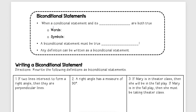Then we have something called biconditional statements. This is when a conditional statement and its converse are both true. If you recall, converse is Q then P. So it happens if P then Q is true and if Q then P is true.